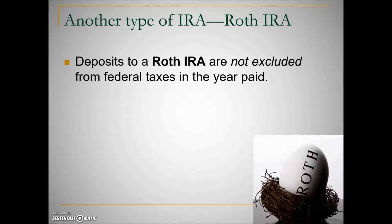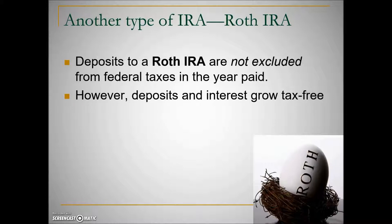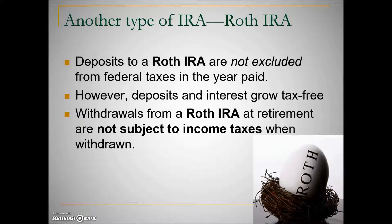There is another type of IRA called a Roth IRA. The difference from a traditional IRA is that when you contribute to a Roth IRA, taxes are calculated on that deposit — you've already paid taxes on the income being deposited. The good news is that the tax obligation has been met, so both the deposit and the interest compounded over the life of the IRA will grow tax-free, meaning withdrawals at age 59½ are not subject to income taxes.